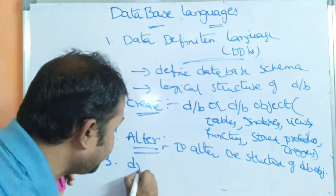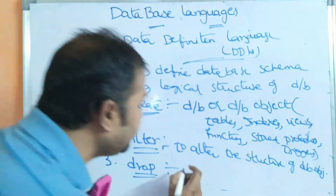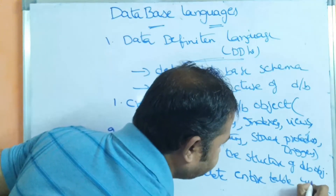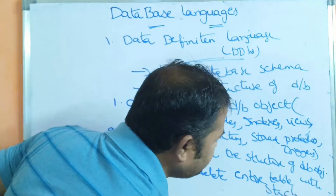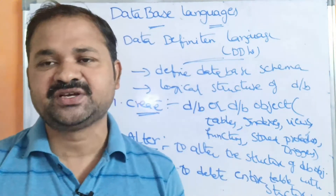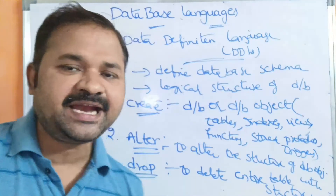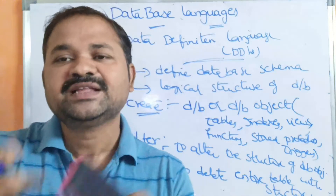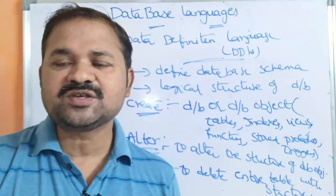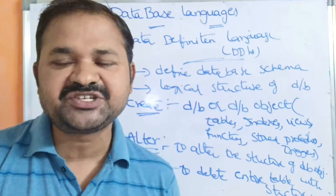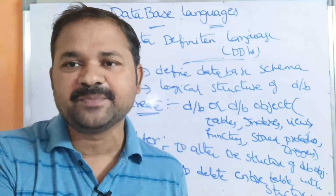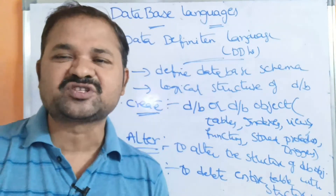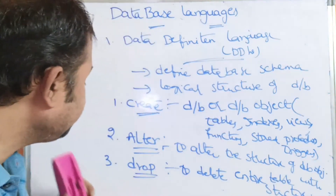The next one is the DROP command. It is useful in order to delete an entire table along with its structure. If a table contains ten records, then all ten records will be deleted along with the structure. After executing the DROP command, there is no table or database object with that name, because the entire structure — including the table name, column names, data types, and constraints — will all be deleted.